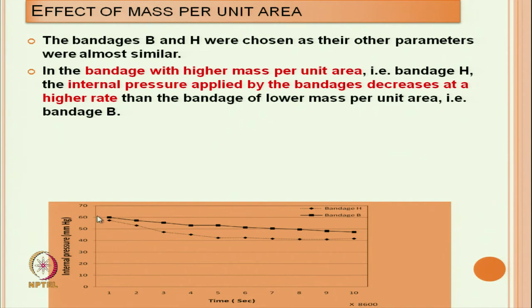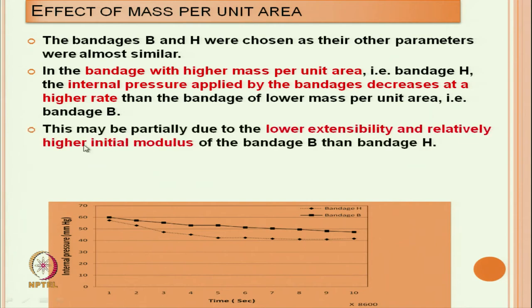The initial internal pressure was kept constant for both bandage B and bandage H by adjusting the tension. If we see these two graphs, bandage H shows higher internal pressure drop - it decreases at a higher rate than the bandage with lower mass per unit area. So the heavier bandage is showing a higher drop in pressure. This may be partially due to lower extensibility and relatively higher initial modulus of bandage B than bandage H.